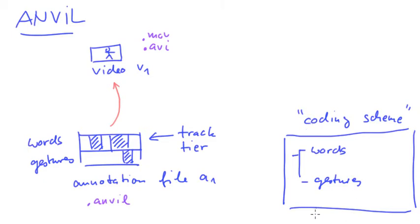And the way to do that in Anvil is you create a new file. And that's called the specification file. Let's call that S1. And this has the extension .xml. Since it's an XML file, although the Anvil file is actually also an XML file. And so the annotation A1 not only has to point to the video V1, but also to the specification file.